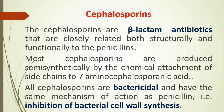Cephalosporins are beta-lactam antibiotics that are closely related both structurally and functionally to the penicillins. Both contain the beta-lactam ring, which is responsible for their pharmacological action. In penicillin, the beta-lactam ring is attached with the penicillinic acid side chain, but in cephalosporins the beta-lactam ring is attached to the side chain seven amino cephalosporanic acid. This is the structural difference between penicillin and cephalosporin.